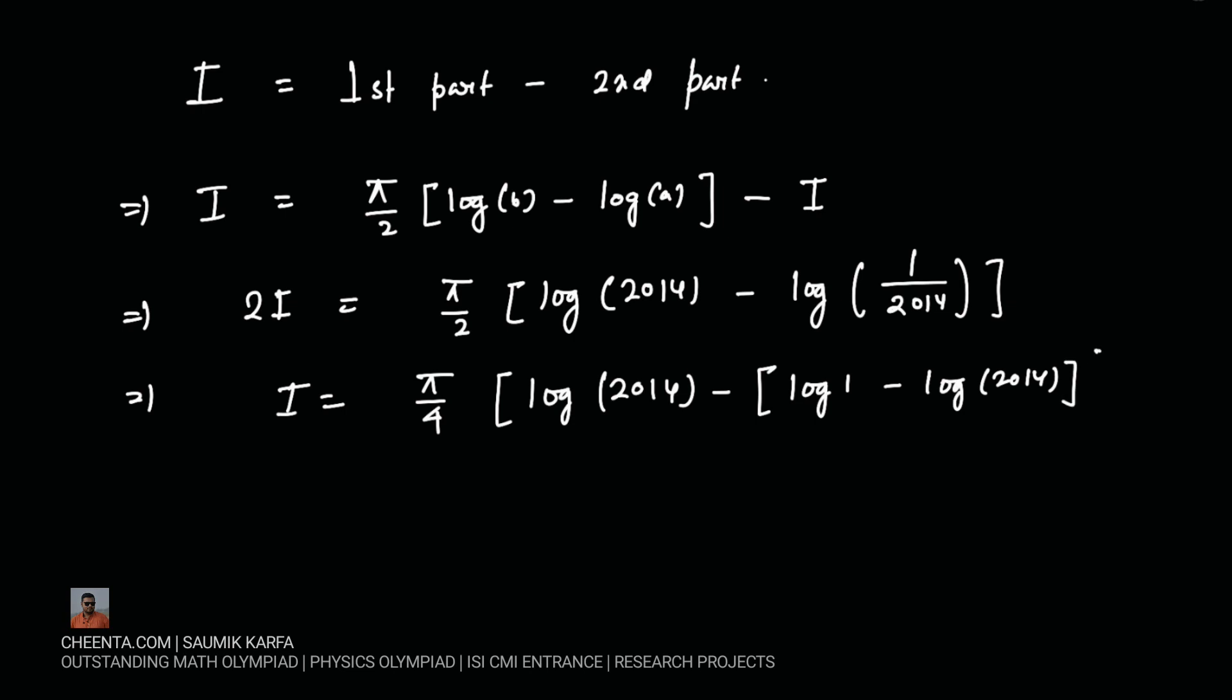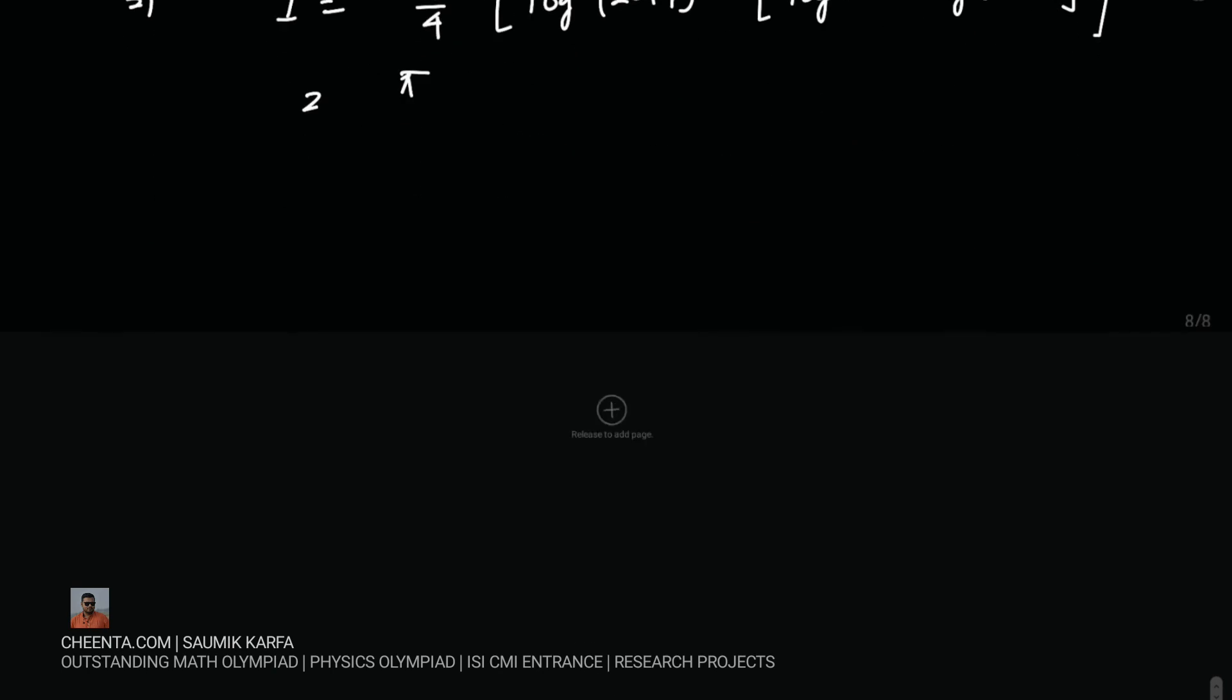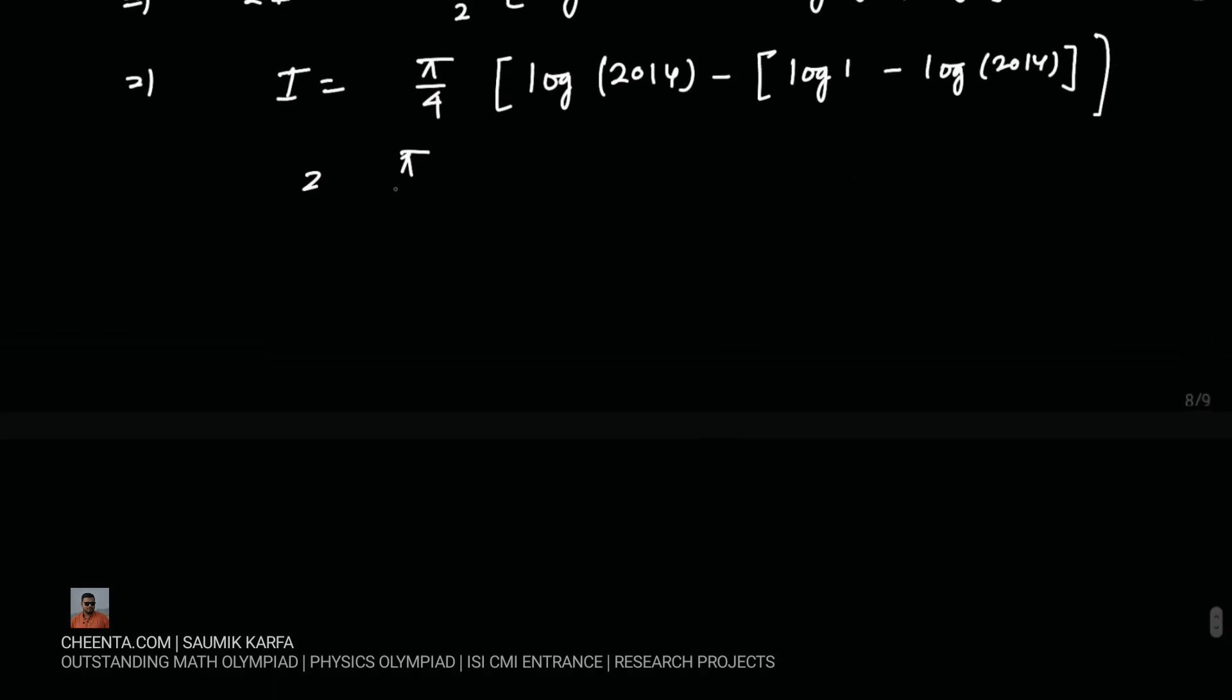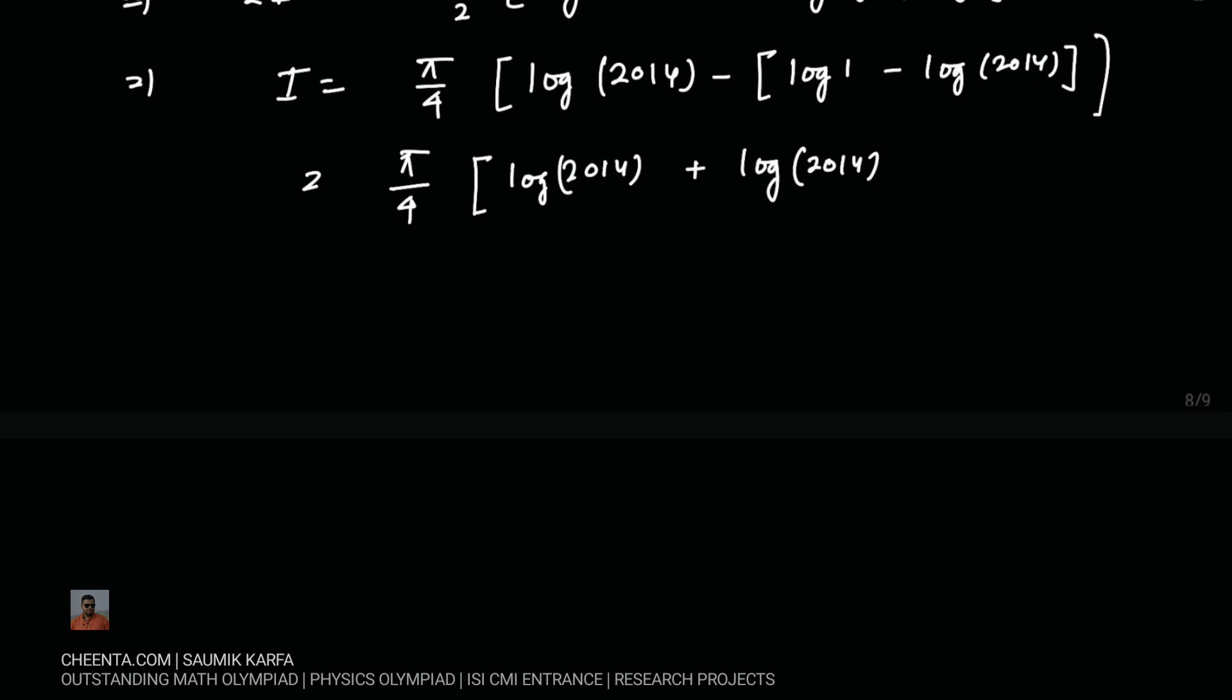So we will get pi over 4, log of 2014 plus log of 2014, because log 1 is 0 and this will just go away. So the final answer is pi over 2 log 2014.